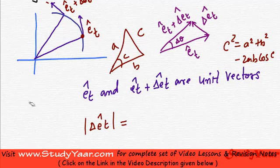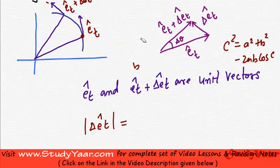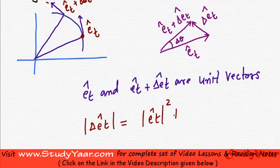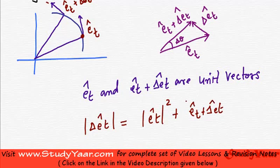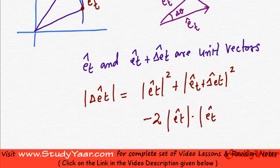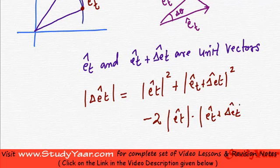So I am going to use the same formula over here. I have my length of this vector is equal to delta ET modulus whole squared plus ET plus delta ET modulus whole squared minus 2 delta ET vector modulus dot ET plus delta ET modulus,